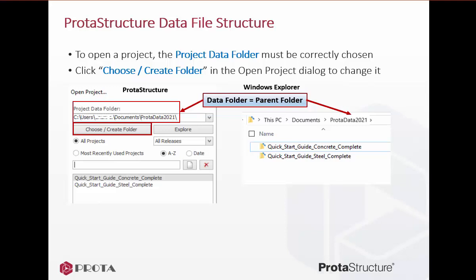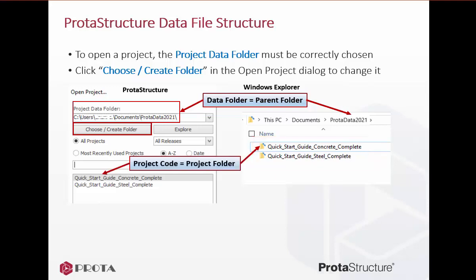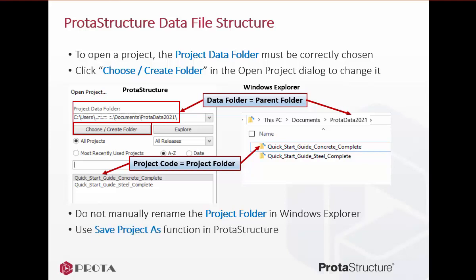The default project data folder in ProtoStructure is always 'ProtoData' plus a postfix of the release version number. In this parent folder, the default quick-start guide project folder is created. Notice that the project name is exactly the same as the folder name in Windows Explorer. Do not manually rename the project folder in Windows Explorer, otherwise you will not be able to open it as it will disappear from the Open Project dialogue. If you wish to rename the project, please use the 'Save Project As' function in ProtoStructure. Further, do not delete any files inside the project folder — all files are essential to the model.